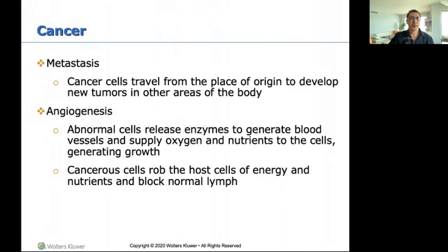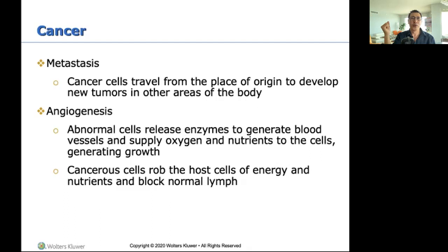Metastasis: cancer cells travel from the place of origin to develop new tumors in other areas of the body. For example, a patient with liver cancer that mets to the lungs may need a ventilator; mets to the brain can cause neurological compromise. At that point, palliative care is usually recommended because cancer in the liver, lungs, and brain is not going to clear up — it will come back even after radiation.